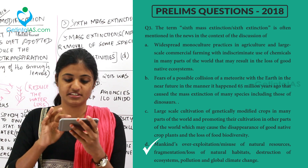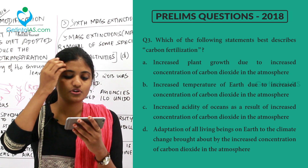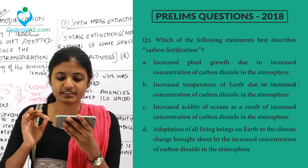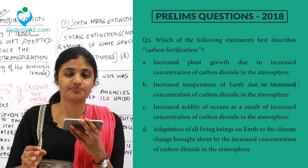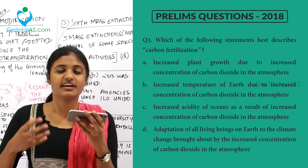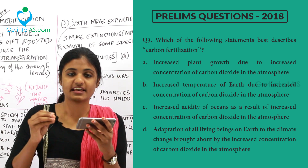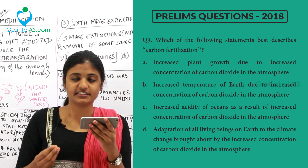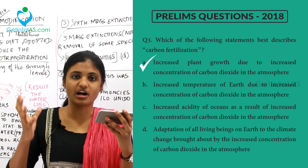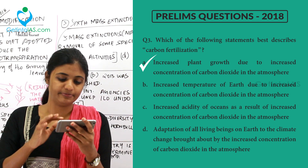Moving to the next question: which of the following statements best describes carbon fertilization? Option A says it is increased plant growth due to increased concentration of carbon dioxide in the atmosphere. Because of too much carbon dioxide produced by human activities, it causes global warming. This global warming helps the growth of plants enormously, and hence researchers have said that crop yield has increased because of carbon fertilization. So option A is the right answer.